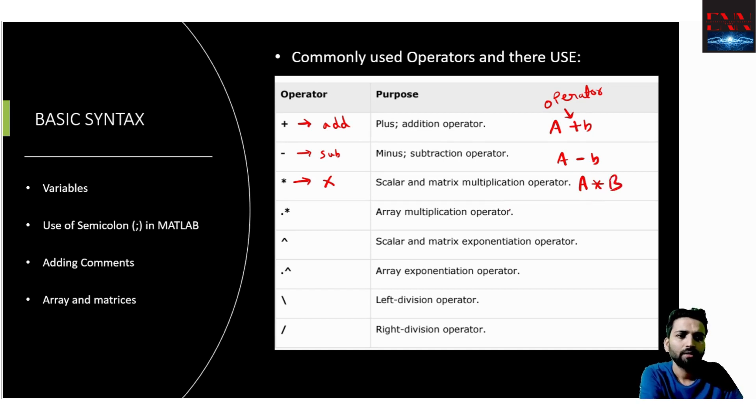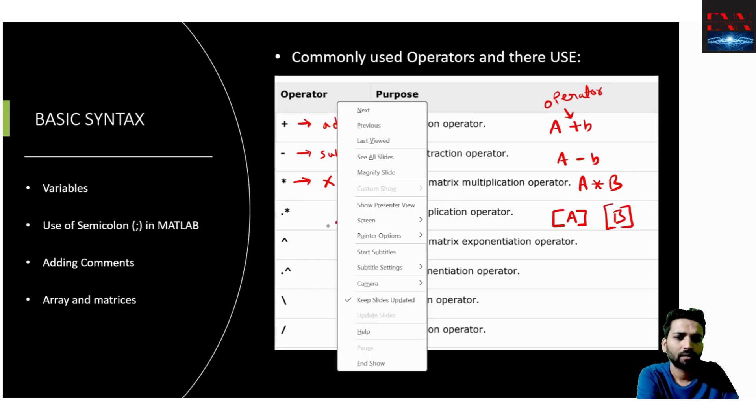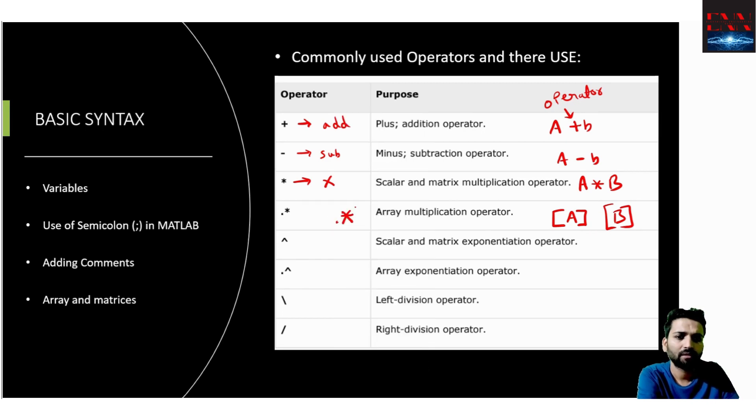But what if A and B are matrices? If A is a matrix and B is also a matrix, how can you multiply these two matrices? Then you need an operator which is dot followed by multiplication sign. When a dot follows any operator, it is assigned for the array or the matrices multiplication, addition or division. Dot signifies that the operator is being used for the matrices.